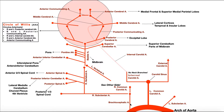The aorta comes off the left ventricle of the heart, and through the ascending aorta we get to the arch, which has three major branches: the brachiocephalic artery, the left common carotid artery, and the left subclavian artery. The brachiocephalic artery diverges into a right common carotid and right subclavian, whereas the left versions come directly off the arch. So we've got left and right common carotids and left and right subclavian arteries.